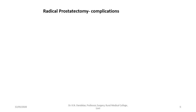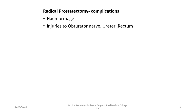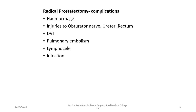Patients with organ-confined cancer have 10-year disease-free survival ranging from 70 to 85%. The associated intraoperative and post-operative complications include hemorrhage, injuries to the obturator nerve, ureter or rectum. Patients can have deep vein thrombosis and may develop pulmonary embolism. Infections are also common, and the most problematic complications are incontinence and impotence, which have historically condemned this procedure.